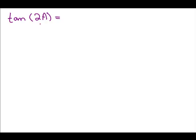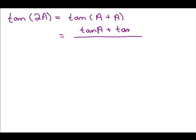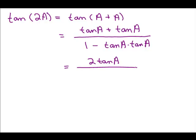Now for the tangent of 2A. We rewrite 2A as A plus A and use the formula for the tangent of a sum: tangent of the first plus tangent of the second, over 1 minus tangent of the first times tangent of the second. Since both angles are A, the numerator gives 2 times tangent A, and the denominator gives 1 minus tangent squared A. So the formula is tangent of 2A equals 2 tangent A over 1 minus tangent squared A.